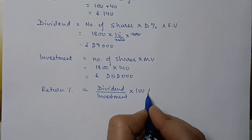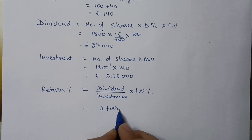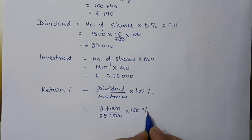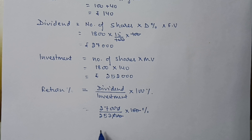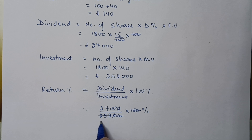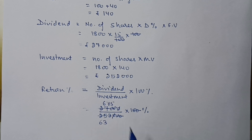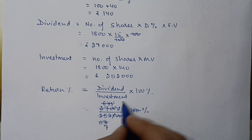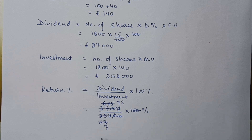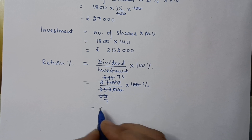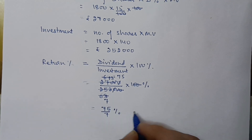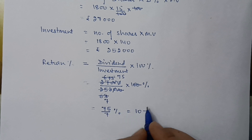Dividend is 27,000 rupees and investment is 2,52,000 rupees. Multiplying by 100% and simplifying — cancelling zeros and common factors — we get 75 upon 7 percent, which as a mixed fraction is 10 whole 5 by 7 percent.